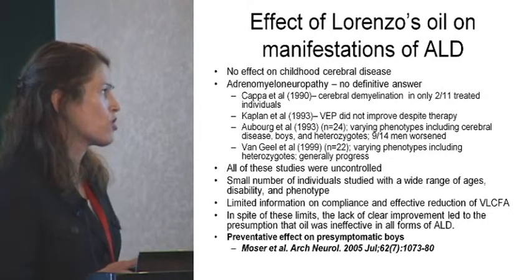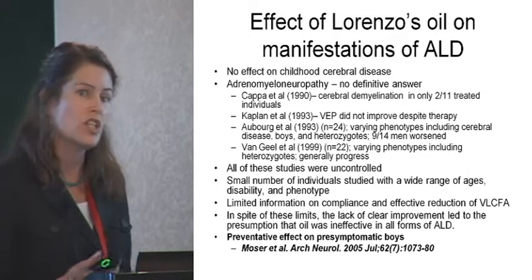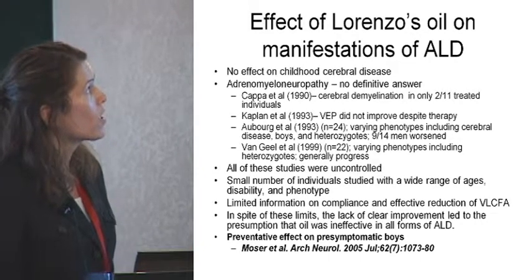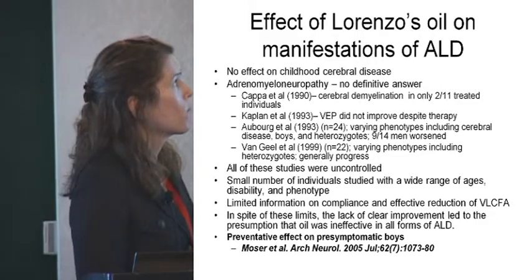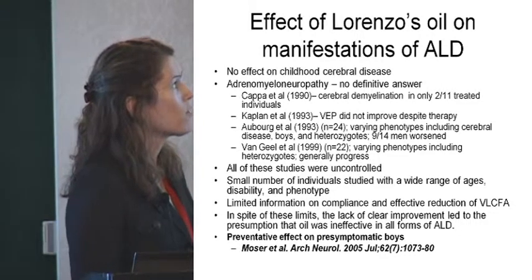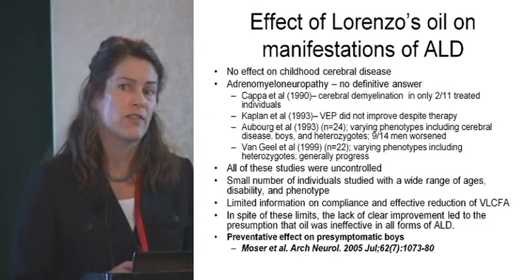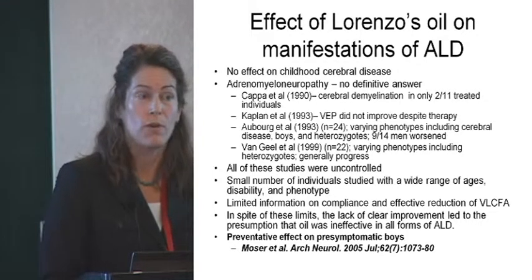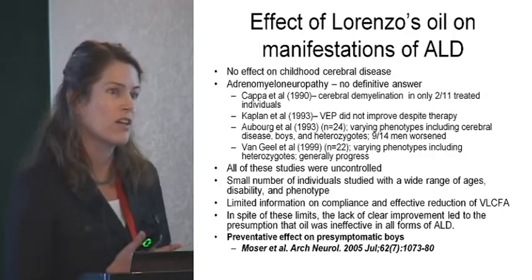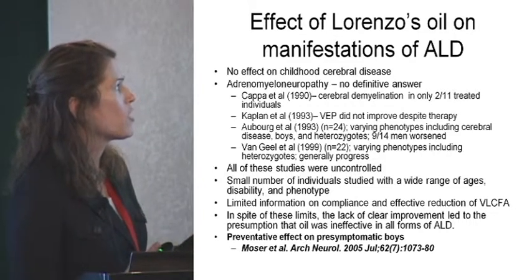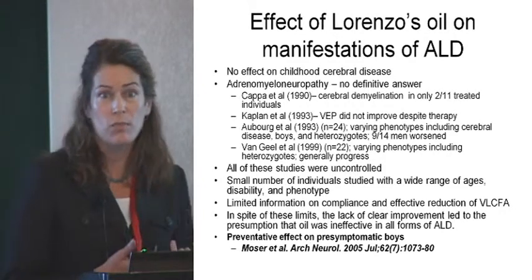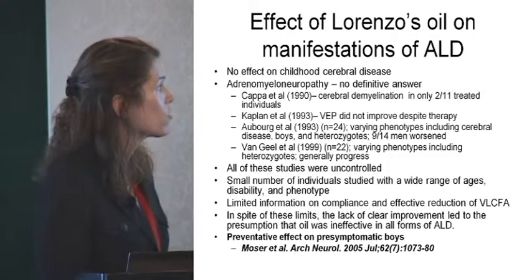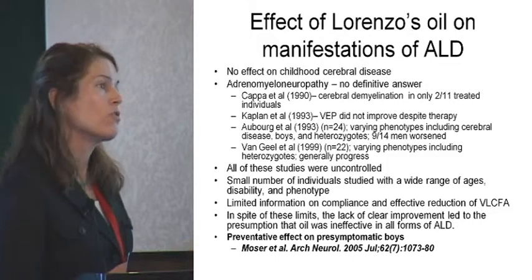The thought then was maybe it just requires longer, maybe the myelin composition isn't really changing, or maybe the Lorenzo's oil isn't really getting into the brain. Individuals then thought to try some of this in AMN. There are multiple studies with no very clear definitive answer — which is common with rare diseases. There's a smaller sample of people, so are we really getting to the true answer? Do we have the right kind of markers to detect a change? Many of these studies used individuals with varying phenotypes, different ages, men versus women — and all of the studies were uncontrolled, so no definitive answer.